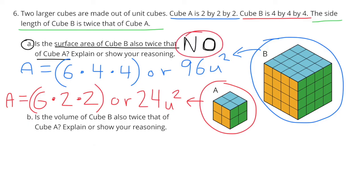Cubes have six sides. For Cube A, each side is two units by two units, so to find the area of all six surfaces you multiply six times two times two, which gives 24 units squared. For Cube B, each side is four by four, so you multiply six times four times four, which gives 96 units squared. The answer is no, because 96 is more than twice that of 24.